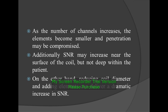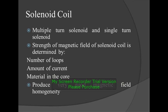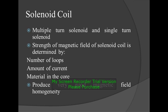Solenoid coil: multiple-turn solenoid and single-turn solenoid. The strength of the magnetic field of the solenoid coil is determined by the number of loops, the amount of current, and the material inside the coil. It produces very good magnetic field homogeneity.